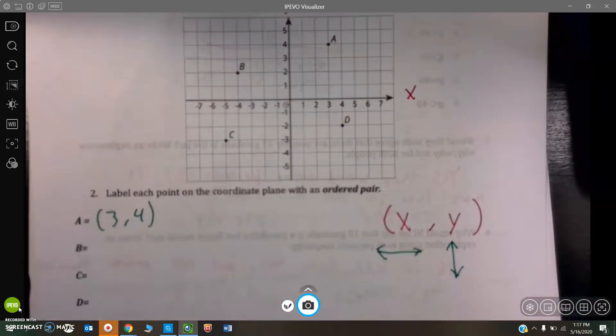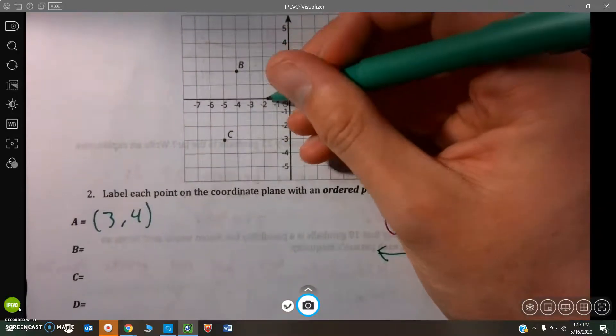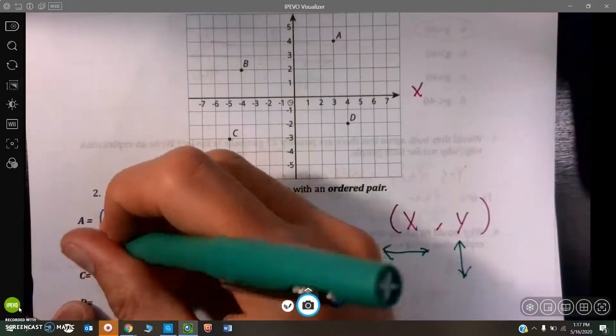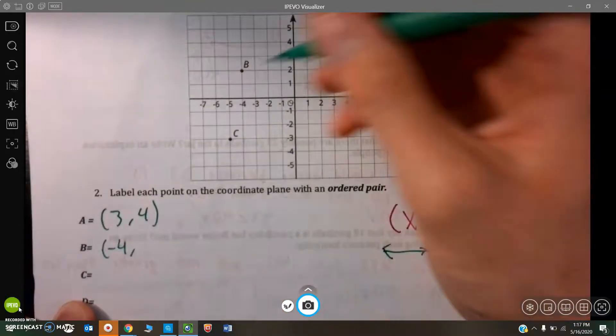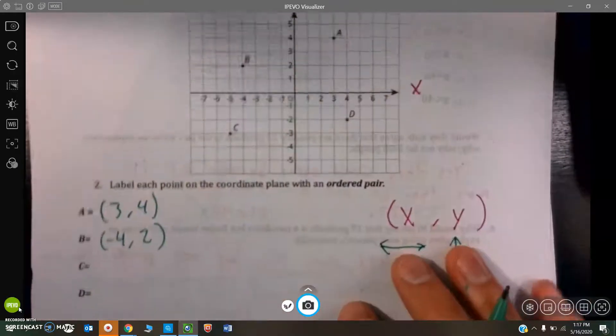B, once again, we always do left and right first. It's to the left of zero, so it's negative. Negative one, two, three, negative four would be its X coordinate. And then it goes up one, two. So, negative four, two.